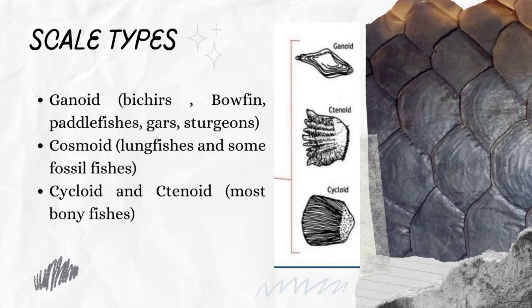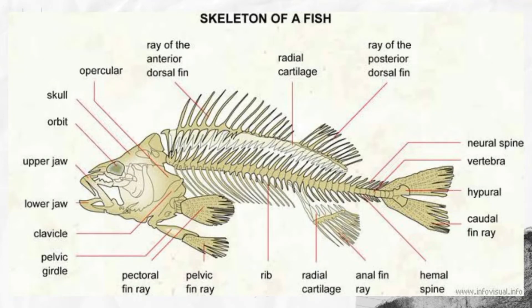Most species of bony fishes are covered with and protected by a layer of plates called scales. There are four different kinds of bony fish scales: the cosmoid, ganoid, cycloid, and ctenoid.